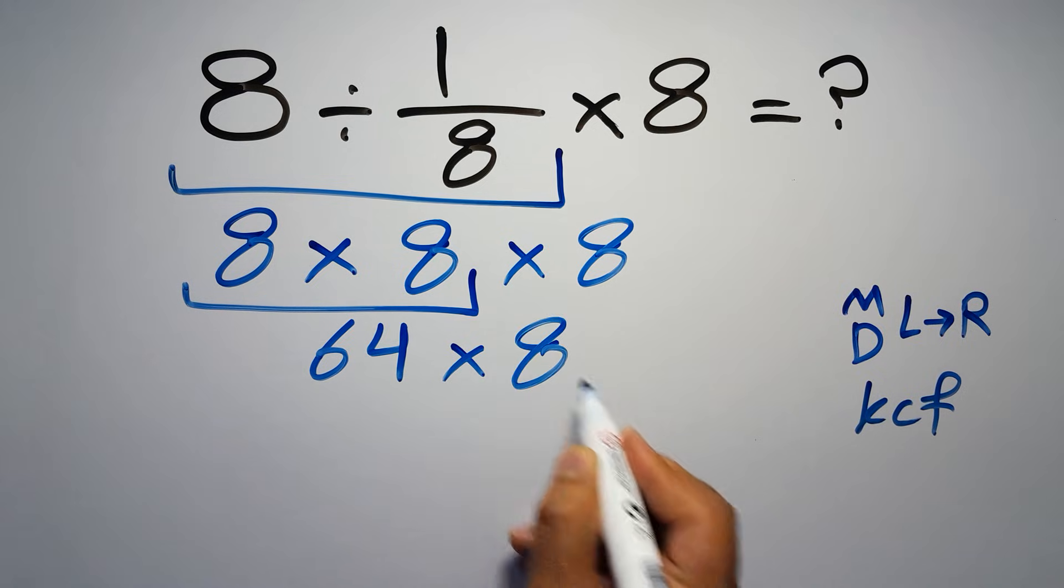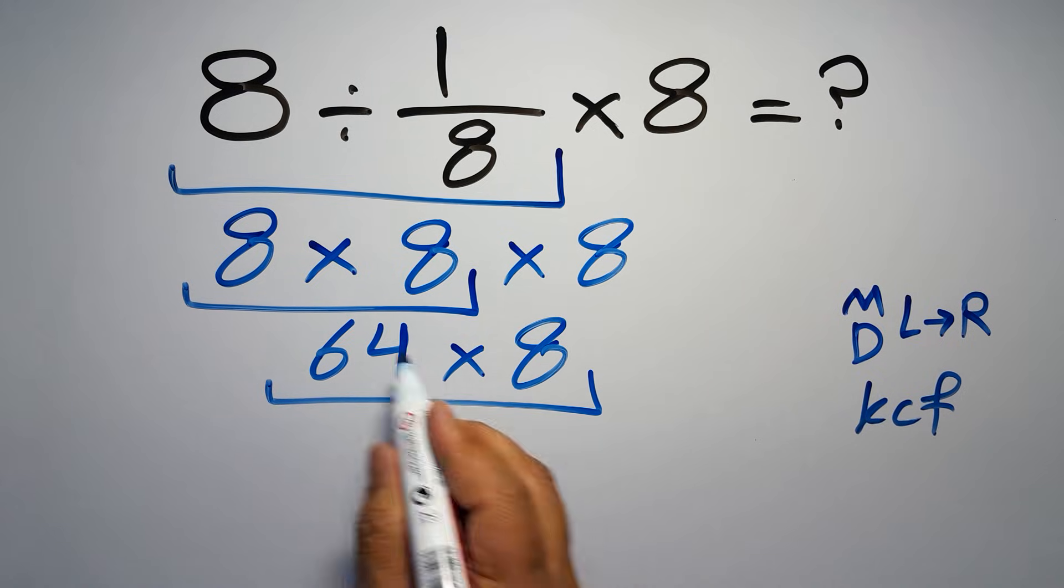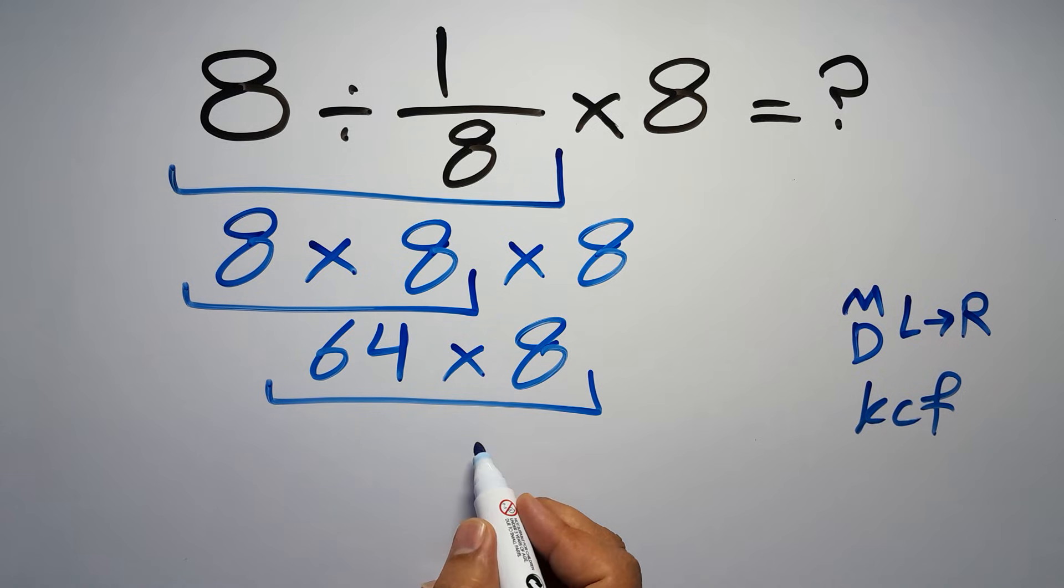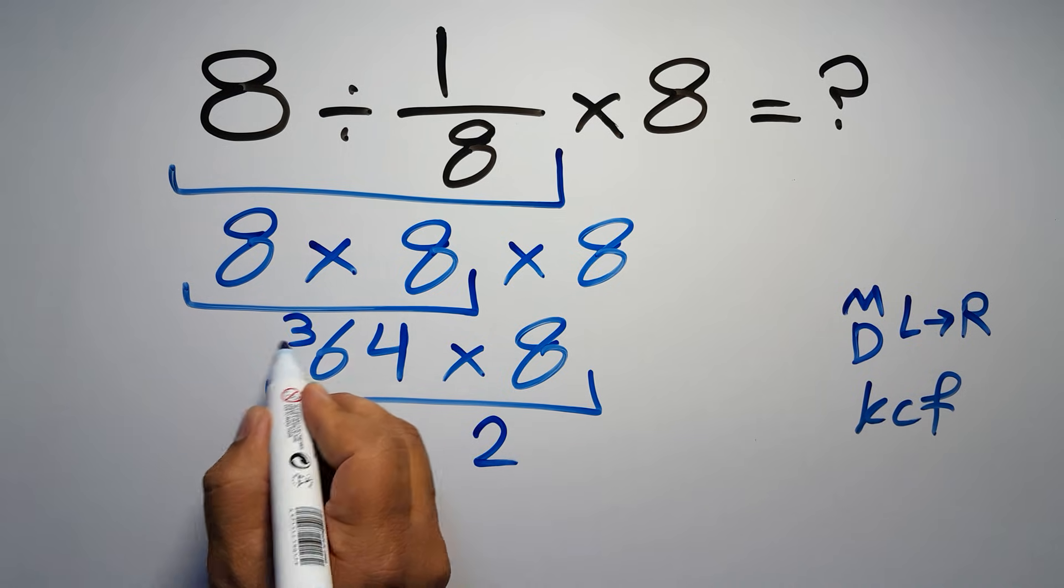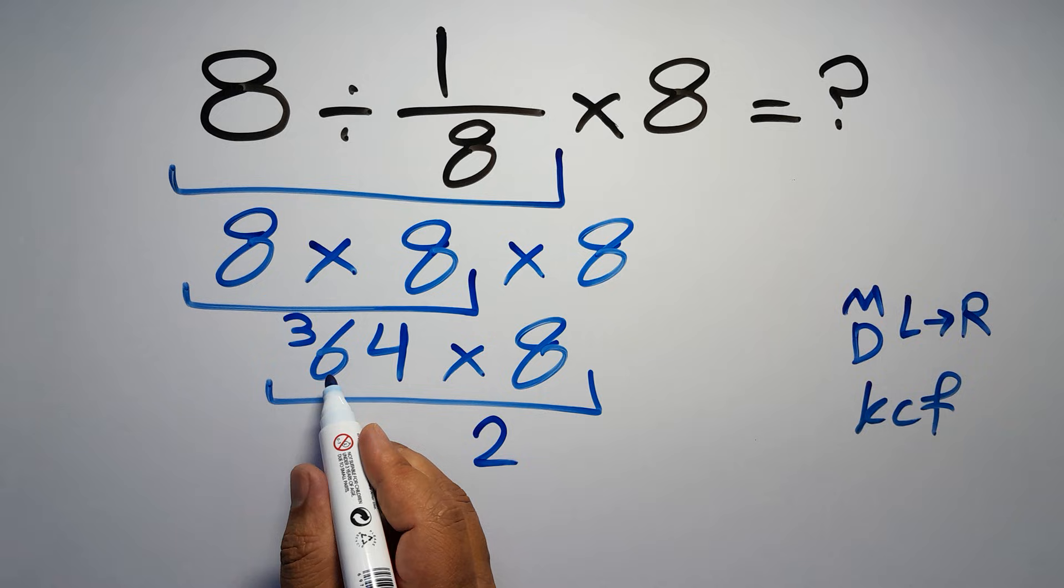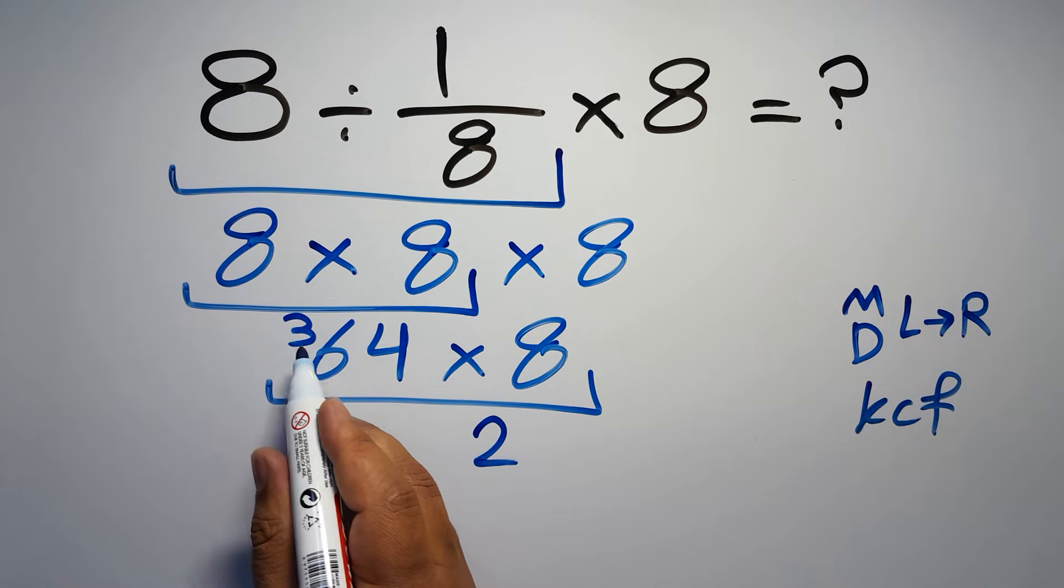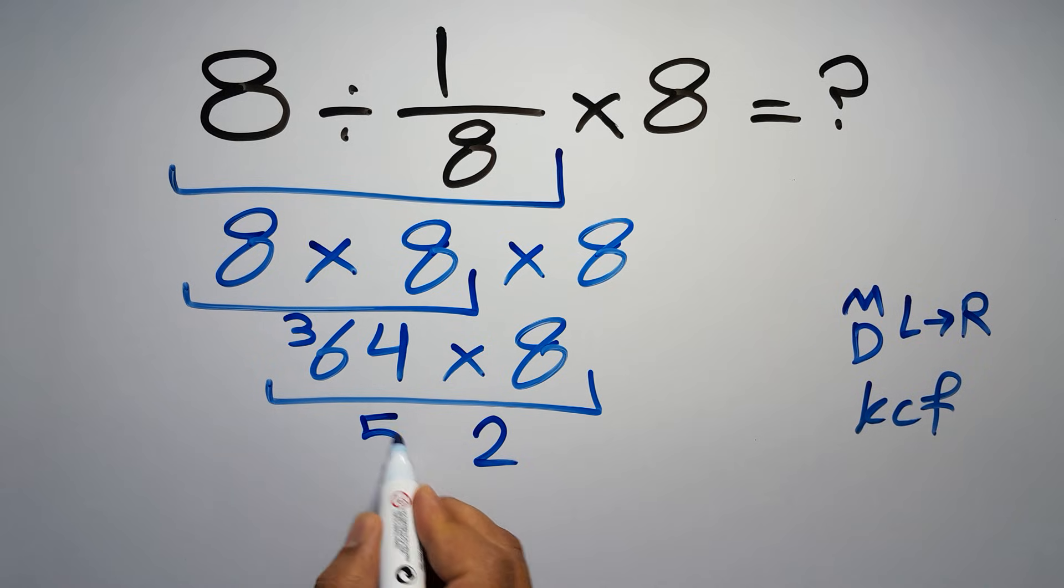8 times 4 gives us 32, we write 2 here and carry 3 here. 8 times 6 gives us 48, and 48 plus 3 gives us 51. So we have 512, and this is our